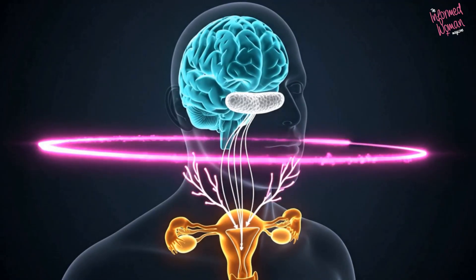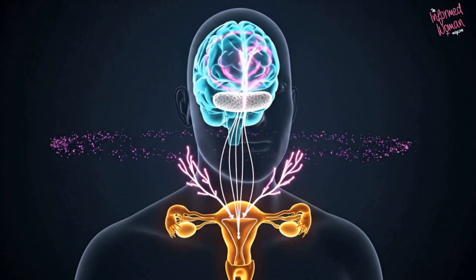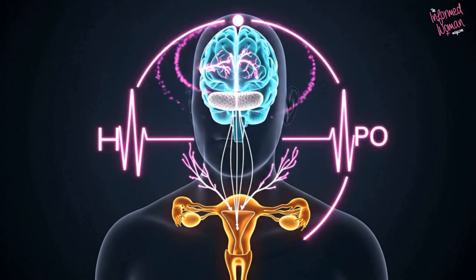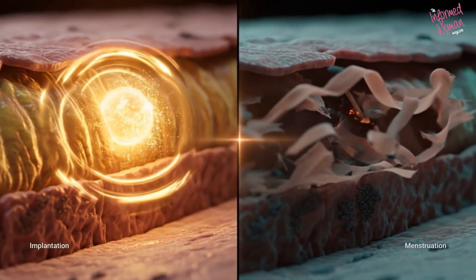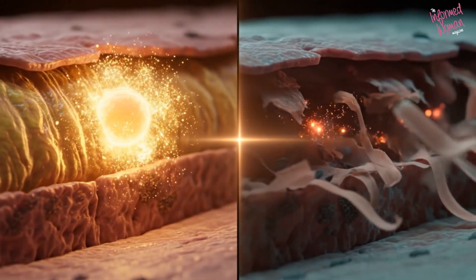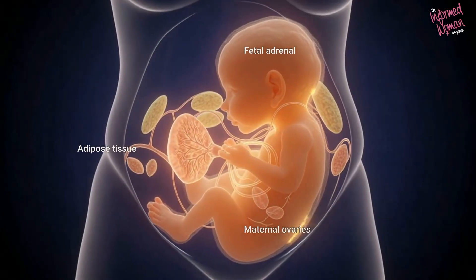Estrogen provides feedback to regulate GNRH, FSH, and LH, maintaining cyclical harmony. This feedback loop sustains early pregnancy if conception occurs, or leads to menstruation if it does not.